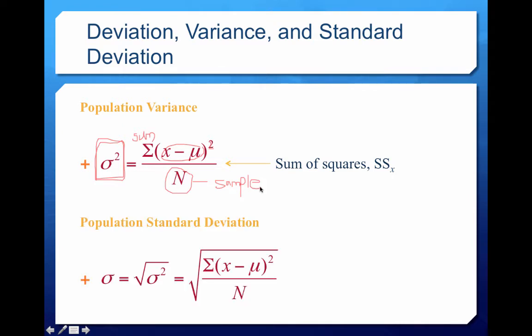The population standard deviation is called sigma, and it's simply the square root of the population variance. Don't worry about memorizing these formulas — I won't be asking you to recall them on the exam. Any question about standard deviation or variance will likely involve Excel or a TI calculator, covered in later tutorials.